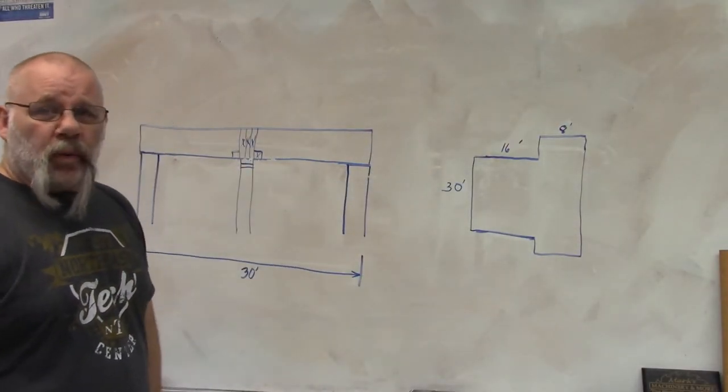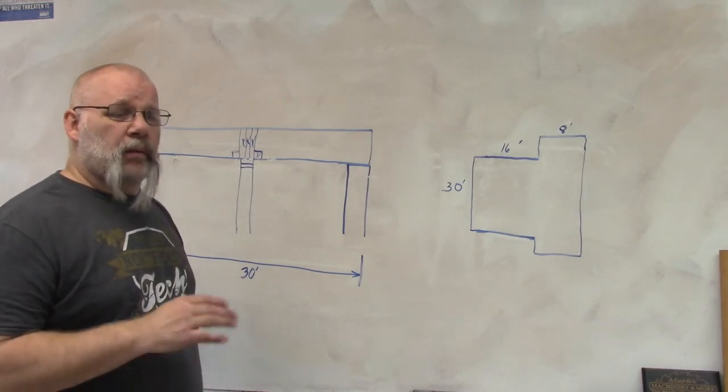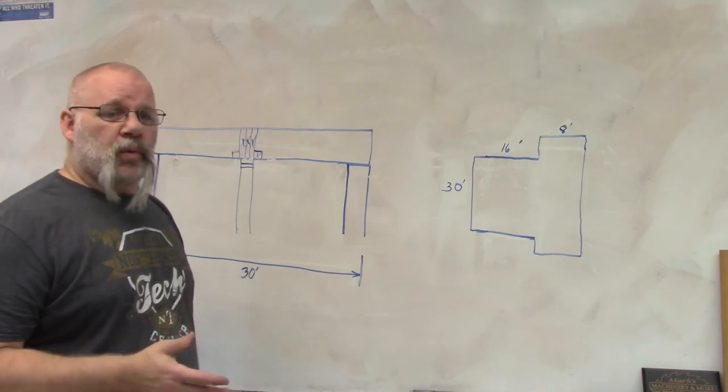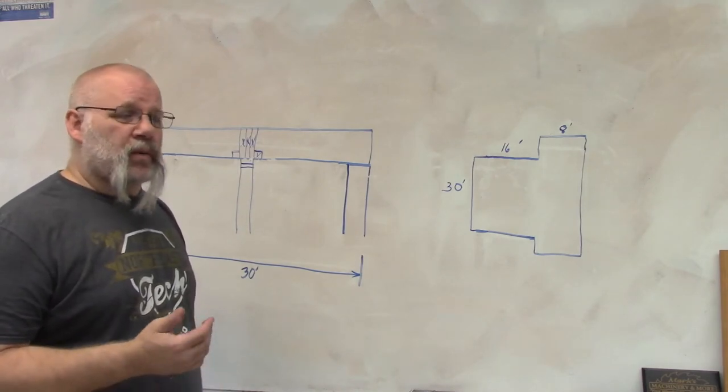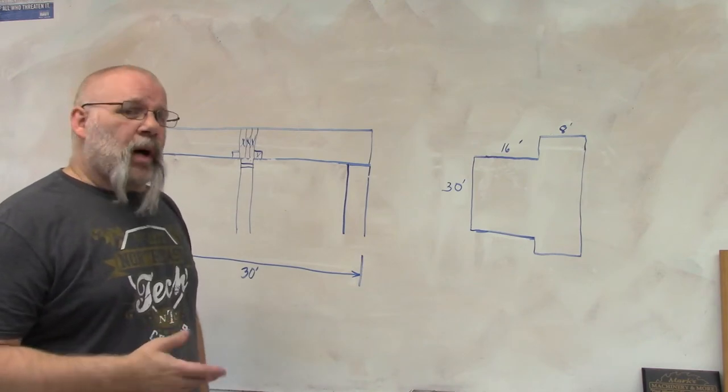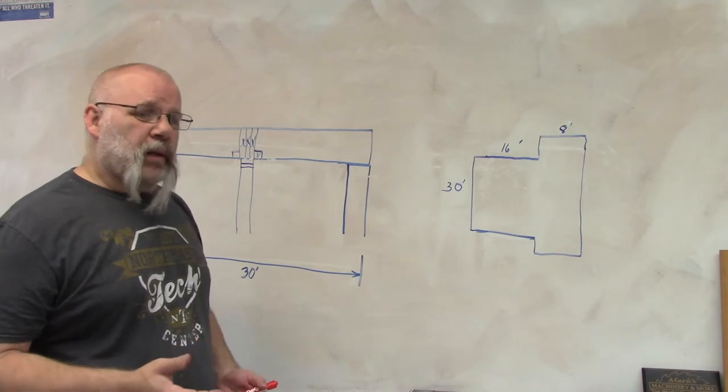Okay, finding bearing walls part two. The first video I did was for a single-story dwelling. Now what if you have multiple stories, a two or three-story house, and you need to find whether a wall is bearing or not? So what are some of the clues for finding whether a wall is bearing?